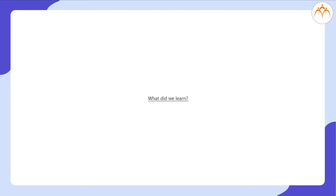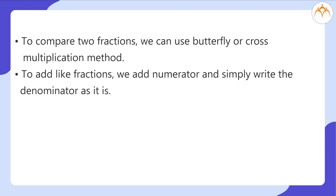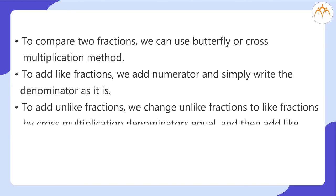What did we learn? To compare two fractions, we can use butterfly or cross multiplication method. To add like fractions, we add numerator and simply write the denominator as it is. To add unlike fractions, we change unlike fractions to like fractions by cross multiplication denominators equal, and then add the like fraction.